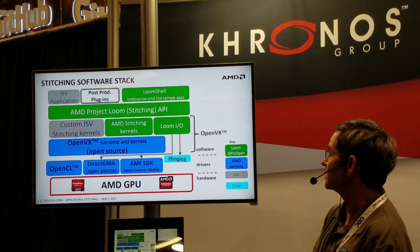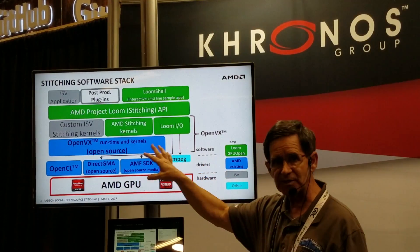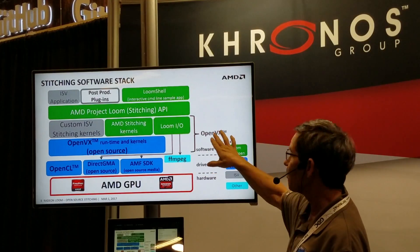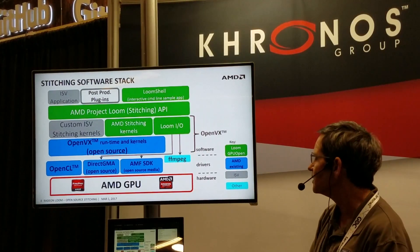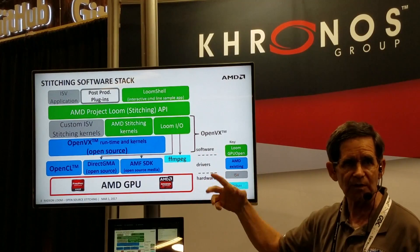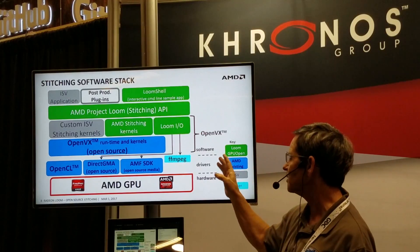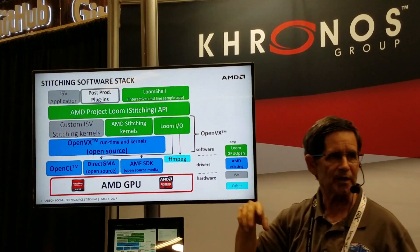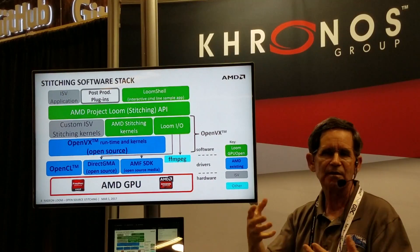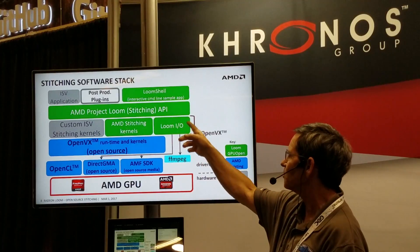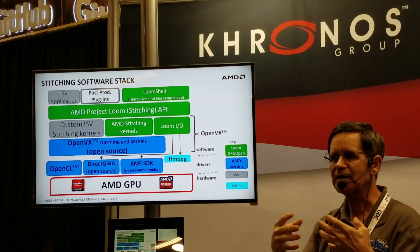This is what the overall software stack looks like. All the green parts are what AMD is providing as Project Loom. The blue parts are existing components from various places — for example, OpenVX, which comes from Khronos, and OpenCL, which comes from Khronos — we use AMD components there. We also use FFmpeg to do encoding and decoding for each camera, since lots of cameras will encode and you'll have to decode them live before stitching. Developers can add their own components in, build an application that controls where you're getting the source video from, goes through our Loom I/O modules, and then after stitching, it can be sent to an encoder or to the internet.